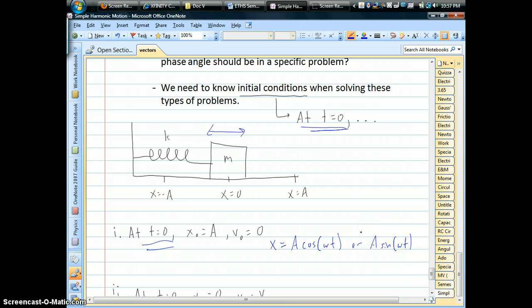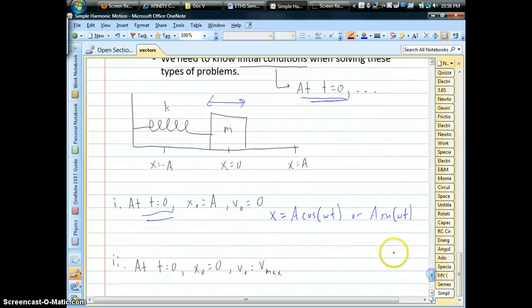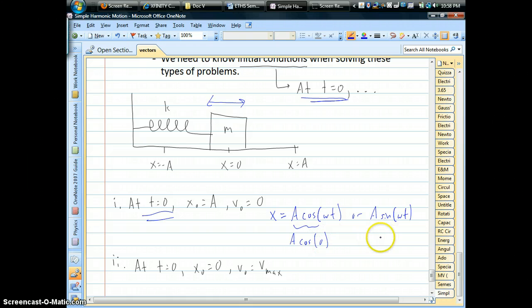Now, how do we know which one to select? Well, the trick is time equals zero. We can plug that in. If we plugged it into the cosine equation, we'd have amplitude times cosine of zero. If we plugged it into the sine solution, we'd have amplitude times sine of zero.